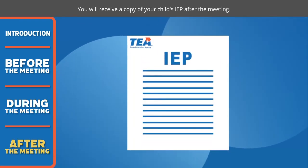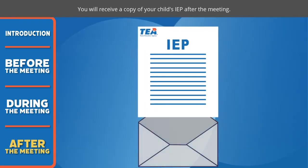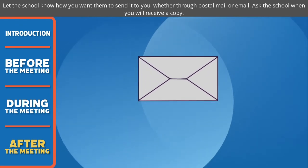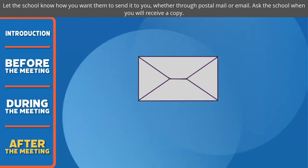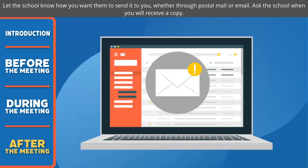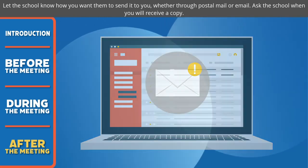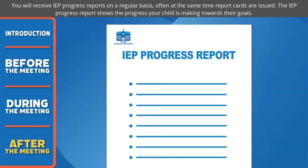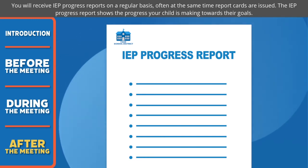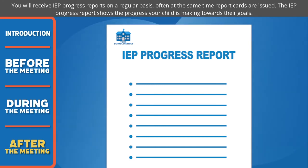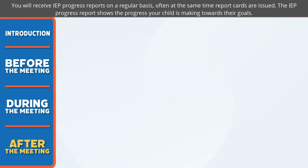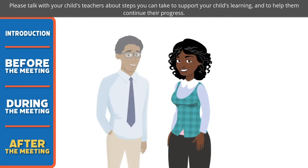You will receive a copy of your child's IEP after the meeting. Let the school know how you want them to send it to you, whether through postal mail or email, and ask when you will receive it. You will receive IEP progress reports on a regular basis, often at the same time report cards are issued. The IEP progress report shows the progress your child is making towards their goals. Please talk with your child's teachers about steps you can take to support your child's learning and help them continue their progress.